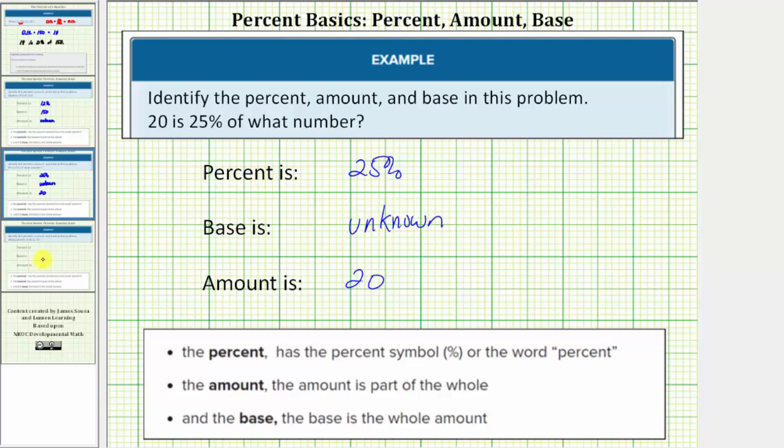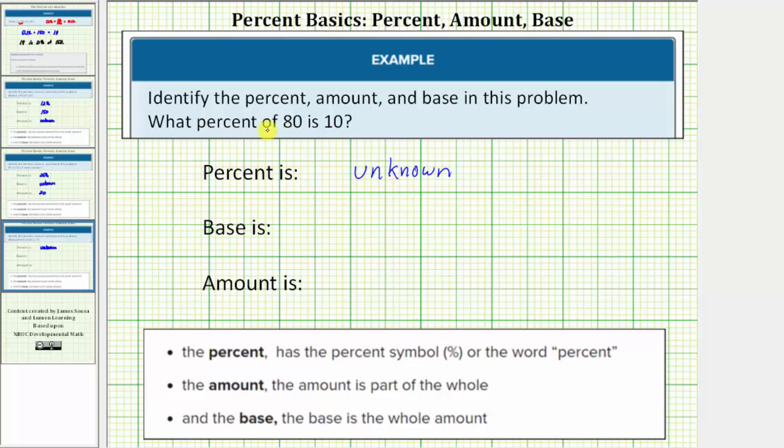Let's look at one more. Here the question is what percent of 80 is 10? Because the question reads what percent, in this question the percent is unknown. Remember, a percent is a part, so we can also think of this as what part of 80 is 10? So 80 is the whole amount or the base, and 10 would be part of the whole or the amount. I hope you found this helpful.